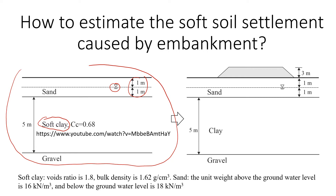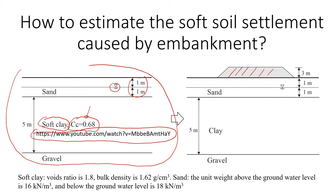When we build an embankment on top of the clay, it will settle. We are given a compression index — if you don't know what compression index is, please watch my other video. This is a very important soil property we use to estimate settlement. The embankment will be three meters high and will generate additional stress applied to both sand and clay, but because clay is very soft it will settle a lot compared to sand. For this reason we are going to estimate only the settlement of the clay layer.